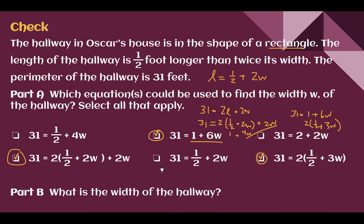For part B, the width of the hallway is 5 feet. Using the equation 31 equals 1 plus 6w — the easiest to solve — subtract 1 from both sides to get 30 equals 6w, then divide both sides by 6: 30 divided by 6 is 5. So the width of the hallway is 5 feet.